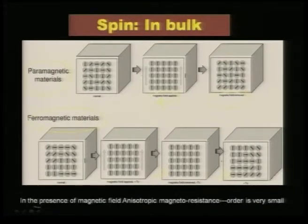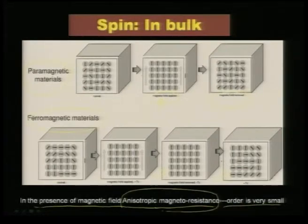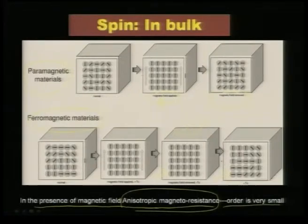A typical ferromagnet gets ordered below Tc; above Tc they get reoriented into a paramagnetic phase. The presence of a magnetic field produces only anisotropic magnetoresistance and the order of such change in resistance is very, very small. As a result, you cannot bring about a colossal change in resistance when you are looking at anisotropic magnetoresistance. Therefore, you need to use the same ferromagnetic material but align it in a different way — stack it differently — then you can induce a colossal drop in magnetoresistance.